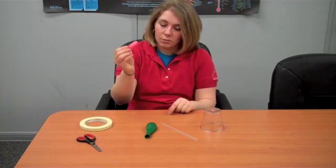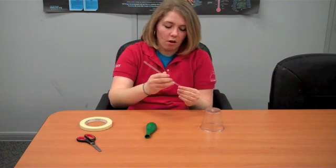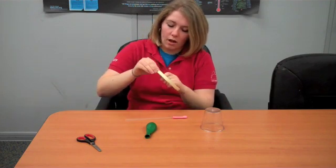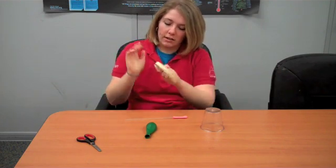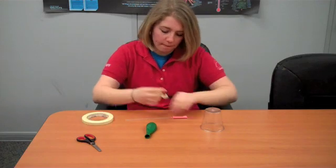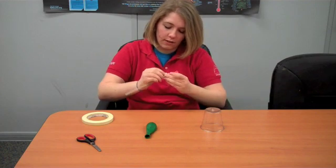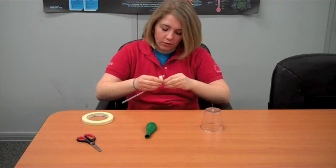Our first step is to take the small balloon, put it over one side of the straw, and we're going to tape that to the bottom of the straw. You don't need a lot of tape, just enough to keep it in place for a little while.